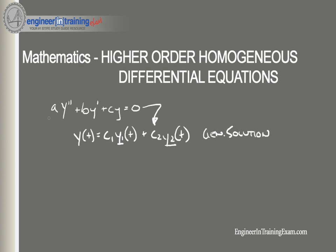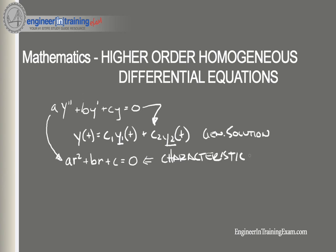To illustrate this, let's put this general formula of a second-order homogeneous linear differential equation into its characteristic form. We just add r's where the y variables are, so this will be a·r² plus b·r plus c is equal to zero. This is known as the characteristic equation.